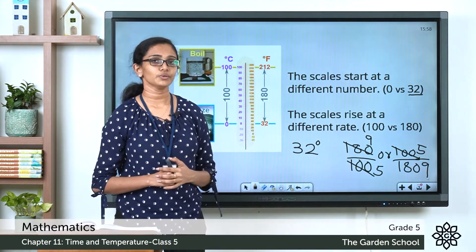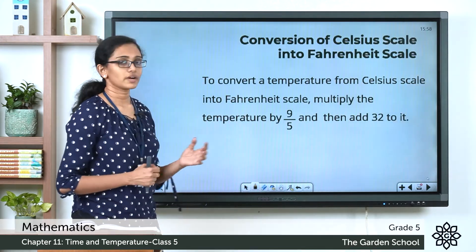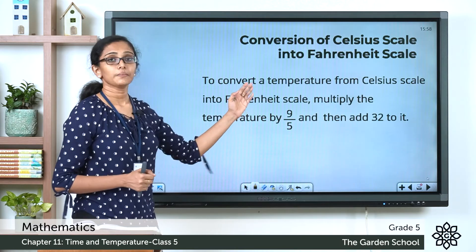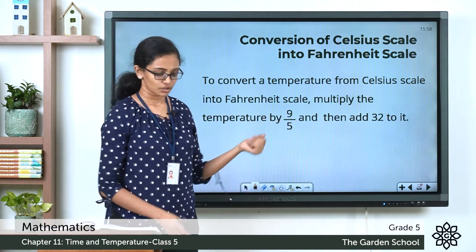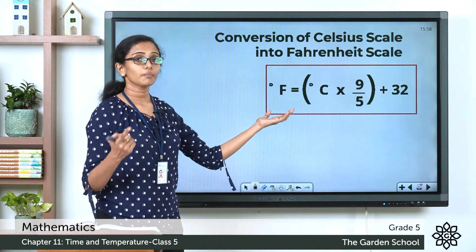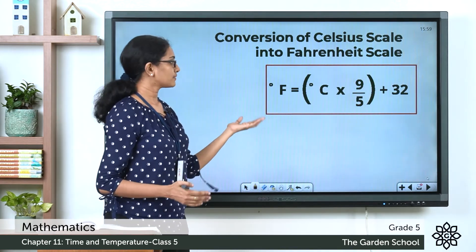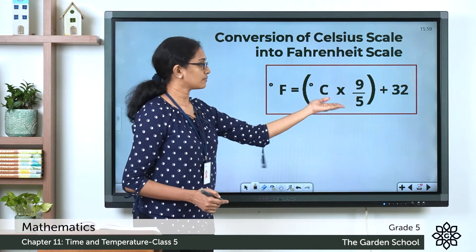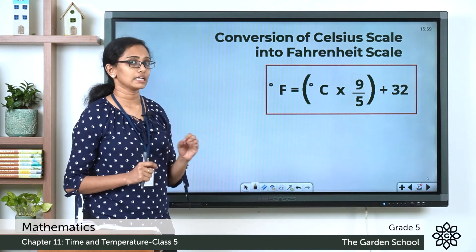To convert a temperature from Celsius scale into Fahrenheit scale, you multiply the temperature by 9/5 and then add 32. The formula is: °F = °C × (9/5) + 32. Please note down this formula in your notebook and learn it by heart.